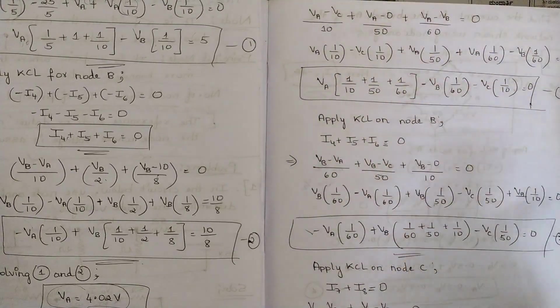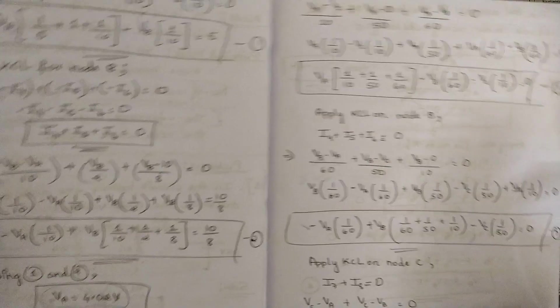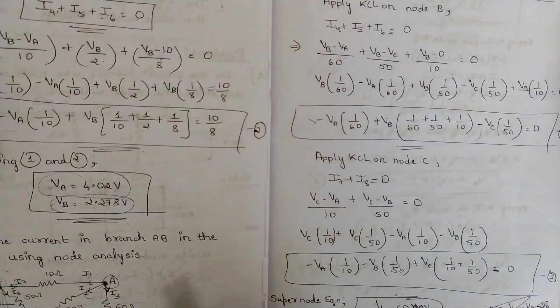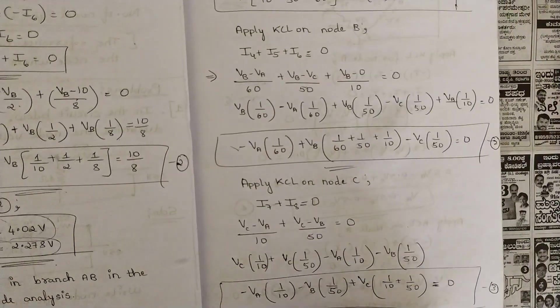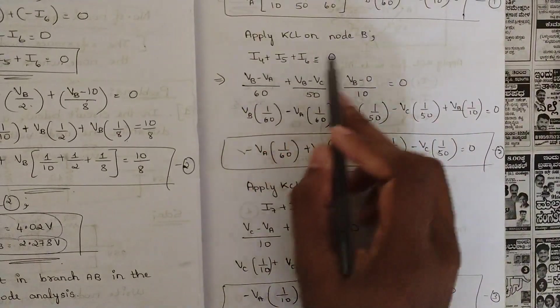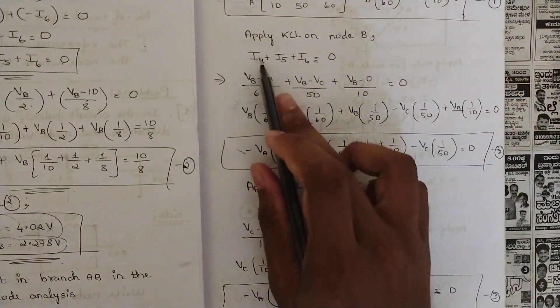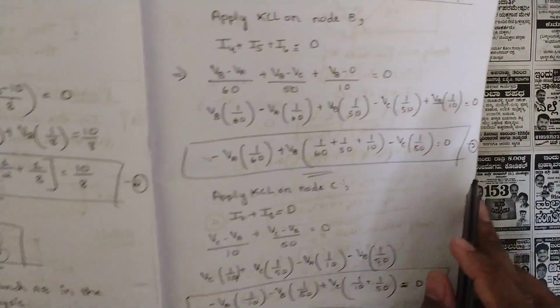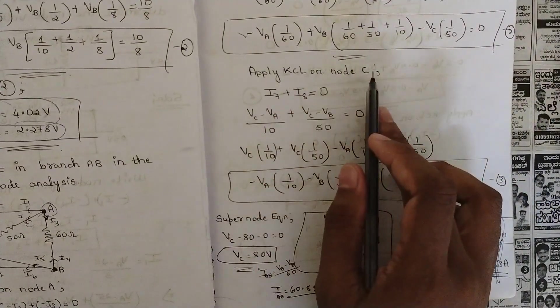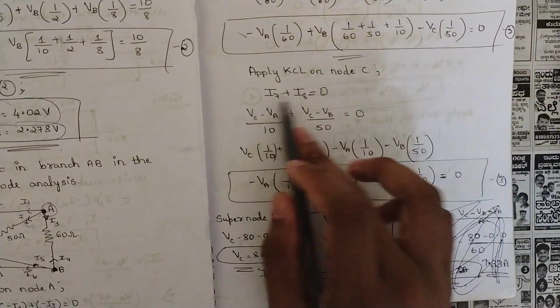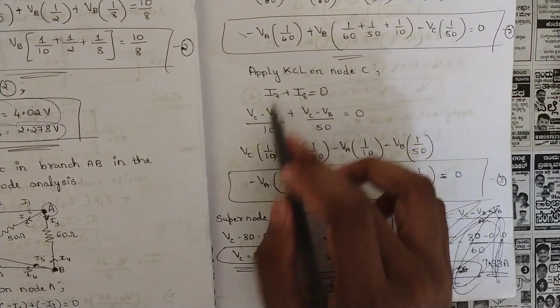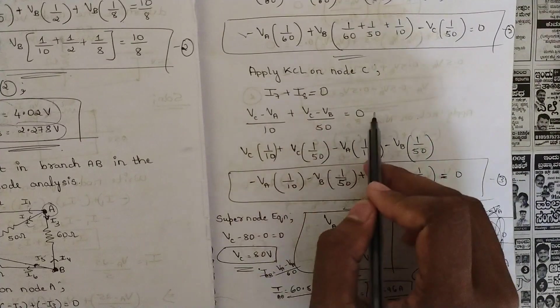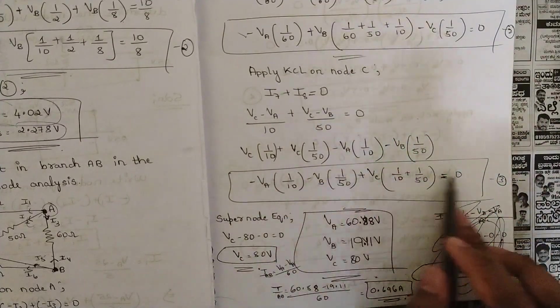Similarly, apply KCL on node B — the currents are I4, I5, I6. Substitute the values of I4, I5, I6, solve, and name it as Equation 2. Similarly, solve KCL for node C — we have only two currents, I7 and I8. Substitute the values, split all coefficients, and write it as Equation 3.